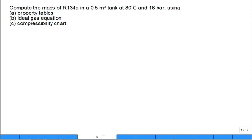Let's solve a problem. Compute the mass of refrigerant 134A in a 0.5 m³ tank at 80°C and 16 bar — using the property tables for part A, assuming ideal gas for part B, and the compressibility chart for part C. These will give three different answers. The most accurate will be part A because it's based on experimental observations tabulated in the tables.